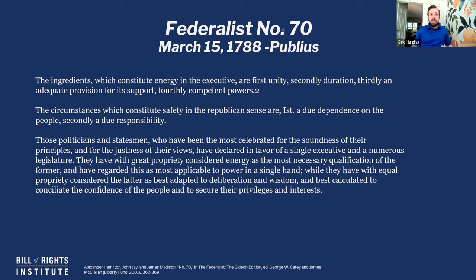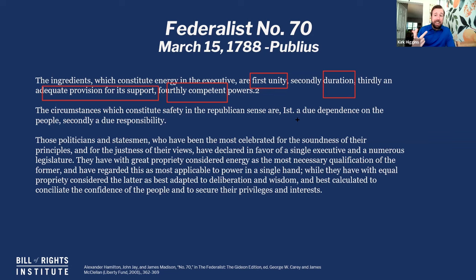Publius now defines what energy means. He asks: what constitutes energy in the executive? First, it's unity. Second, it's duration — how long the individual is in office. Third, adequate provision — what kinds of powers the executive is given. And fourth, competent powers — how those powers are actually constituted and work out in practice. Then he goes on to say that the circumstances which constitute safety in a Republican sense are: first, a due dependence on the people, and second, a due responsibility.